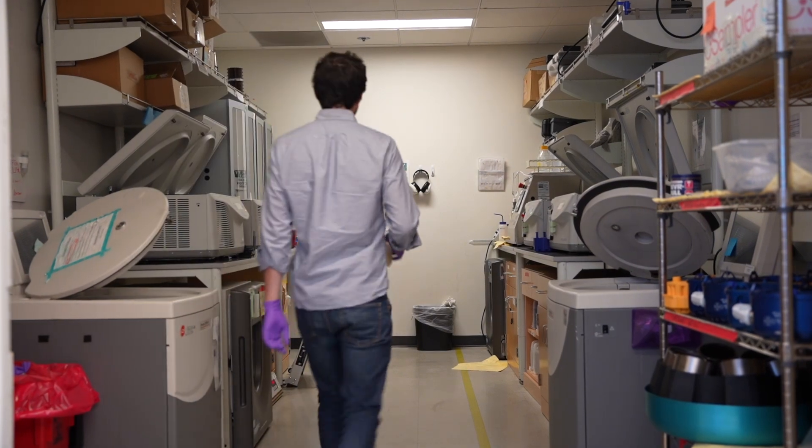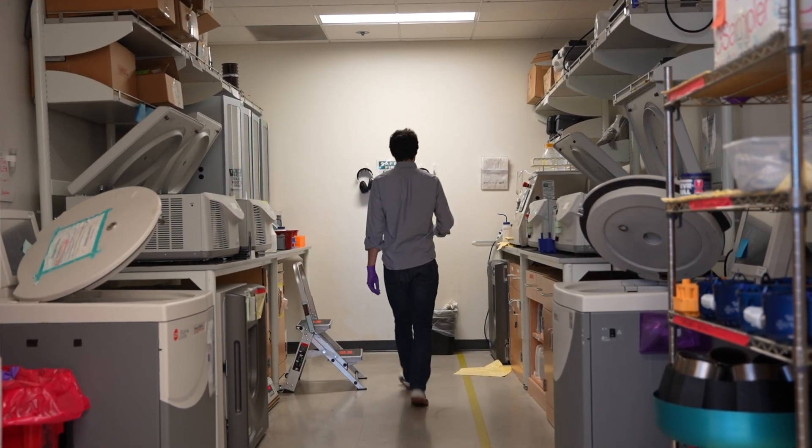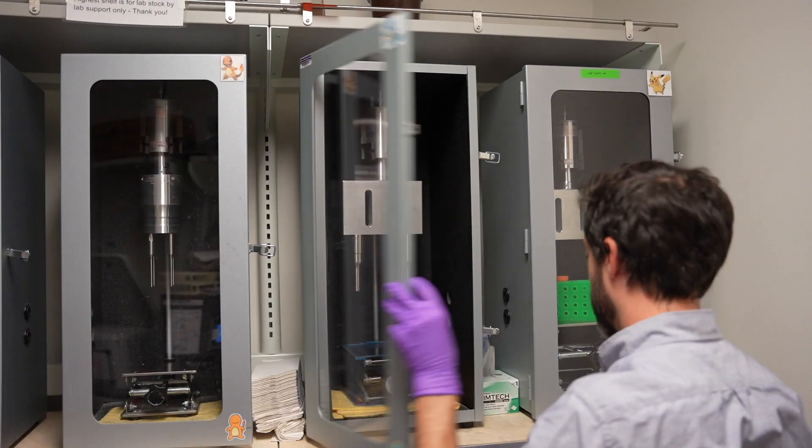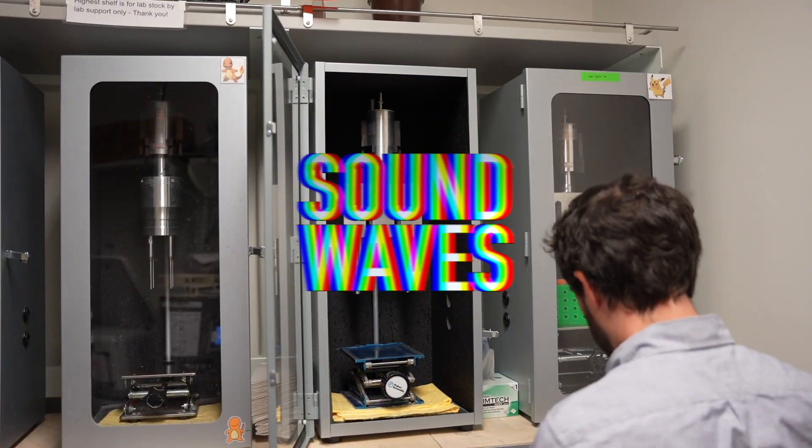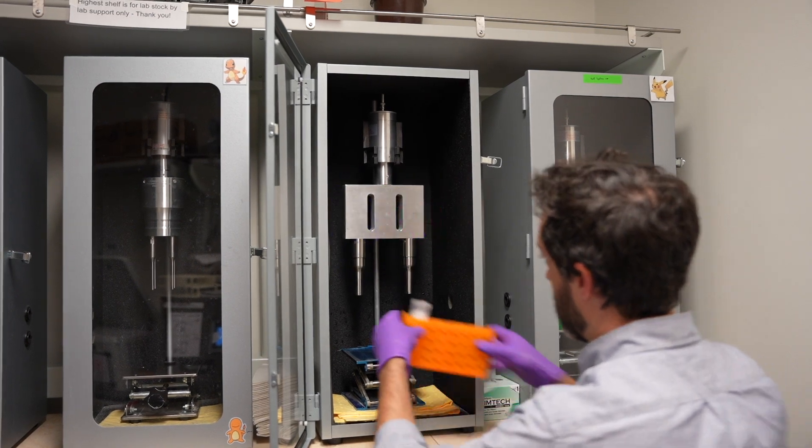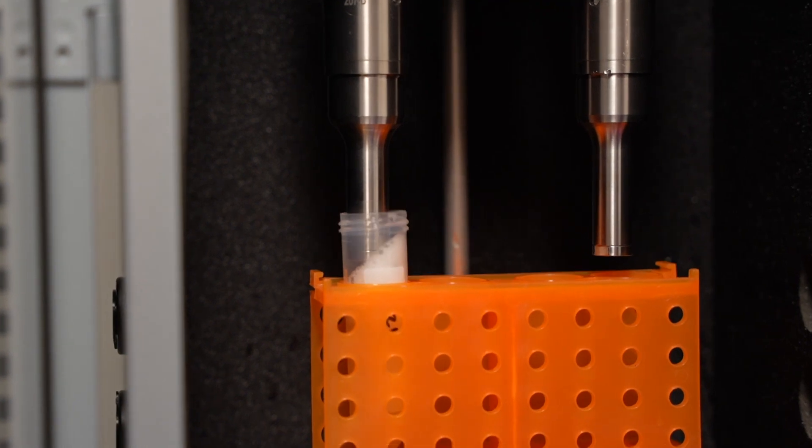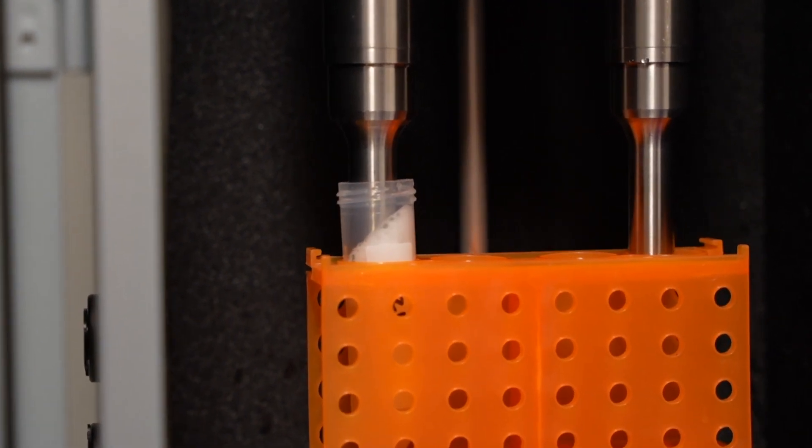The first thing we do is break open the cells to free our protein that's trapped inside. To do this, we don't use a hammer to hit the cells, we use sound waves. This machine is a sonicator. It has a metal rod that vibrates with super high intensity, emitting high-energy sound waves that rip open nearby cells.